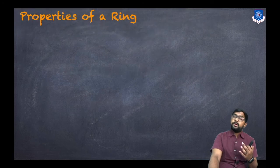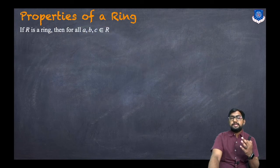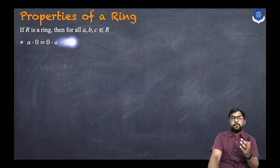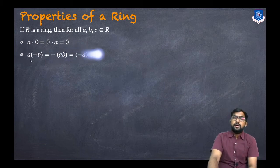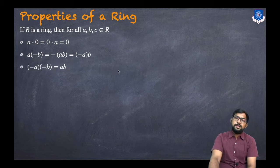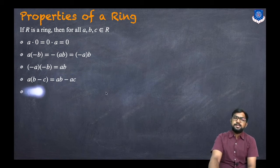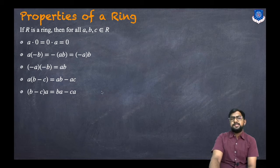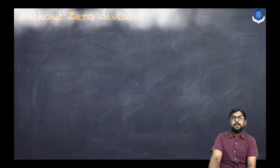Now, what are the properties of a ring? We discussed what is a ring in the previous session. If R is a ring, then for all a, b, c belonging to R, the properties are: a·0 = 0·a = 0; a·(−b) = −(ab) = (−a)·b; (−a)·(−b) = a·b; and multiplication distributes over subtraction, so a·(b−c) = ab−ac, and (b−c)·a = ba−ca.